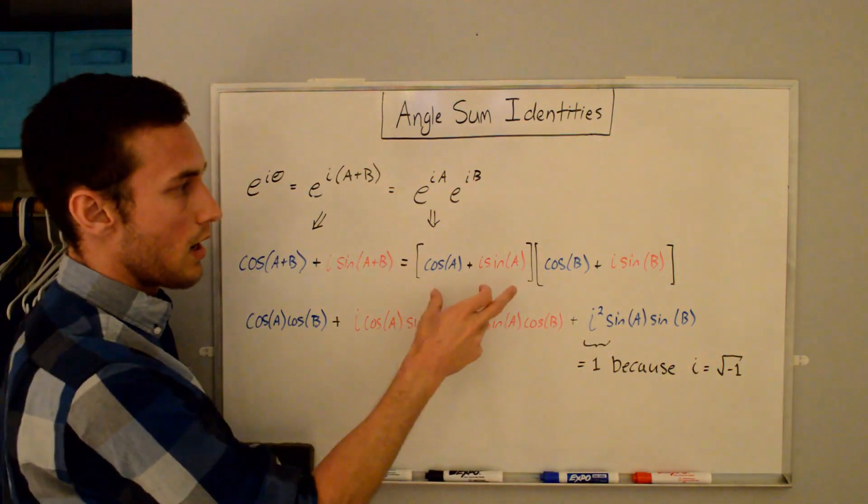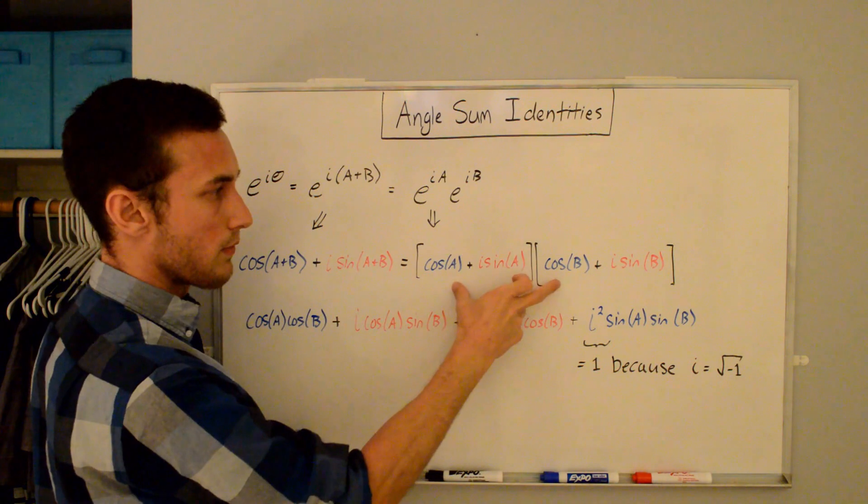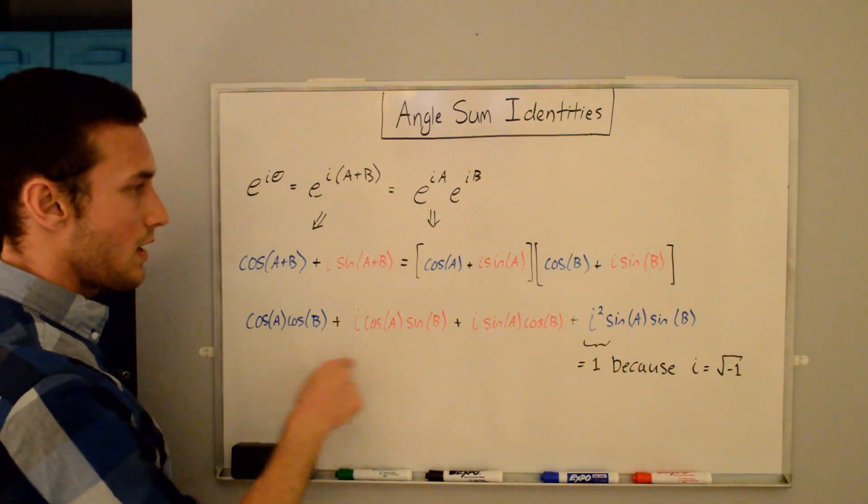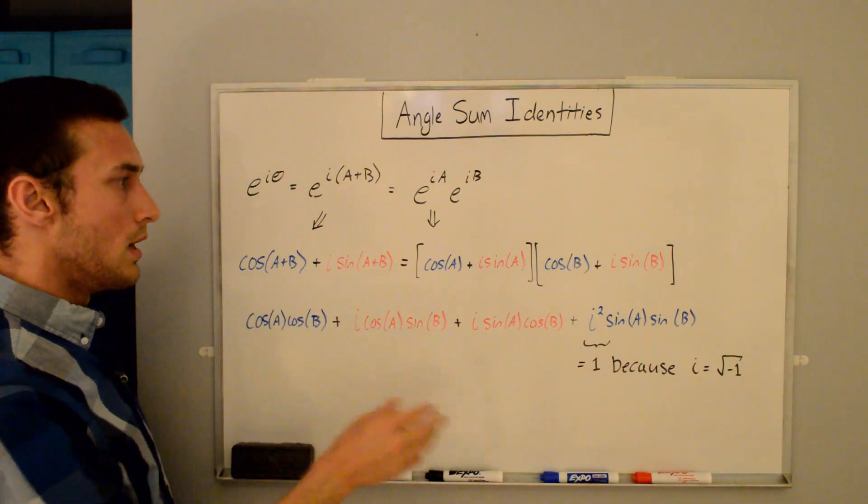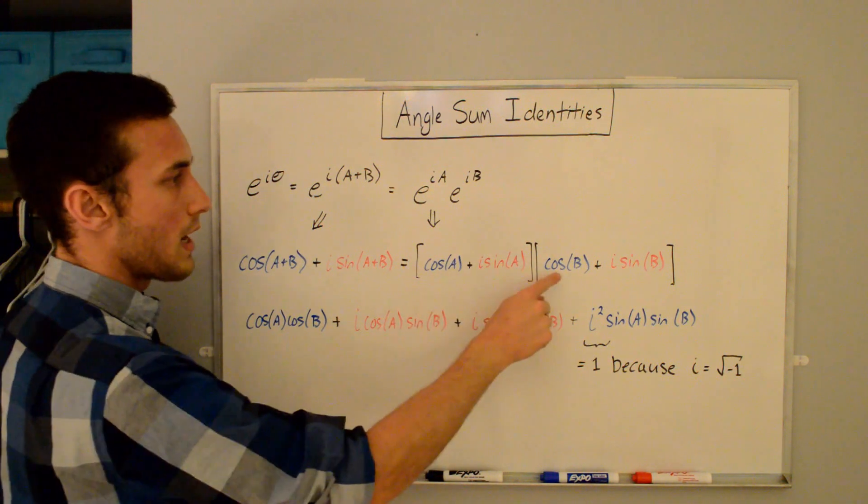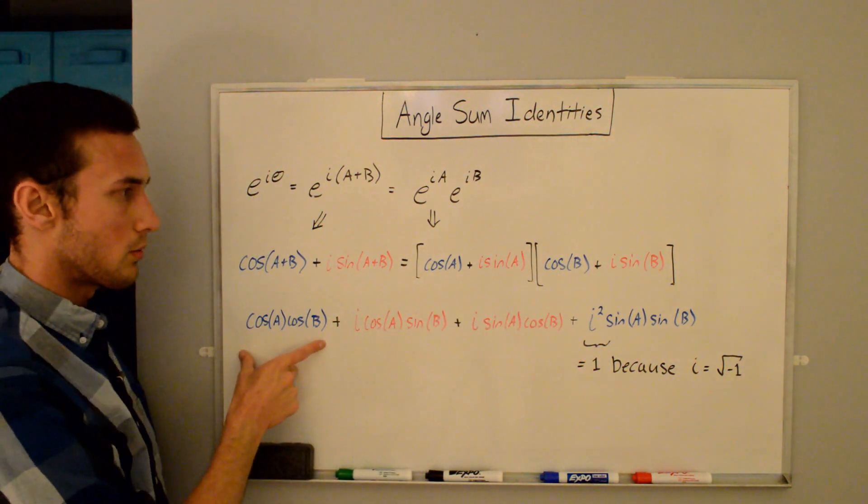And now what I'm going to do is just FOIL this. So multiply the first, outer, inner, last. And we get this here. And this is still color coded in terms of the real and imaginary parts. So the first is cos(A)·cos(B). That's here. That's a real part.